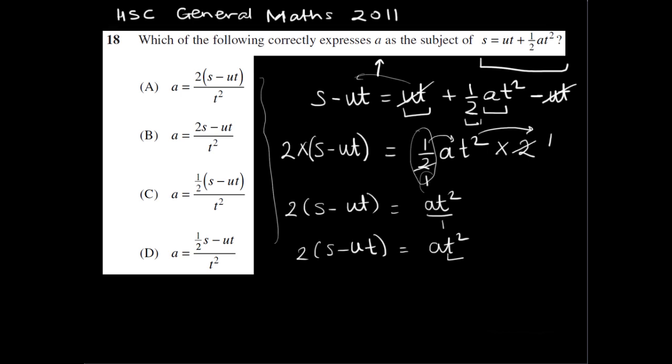Now we need to do something about this t squared. So to get rid of that t squared so that we have just the a, I'm going to divide by t squared so it cancels out. And again, what you do to the right-hand side, you must do to the left-hand side. So I'll divide the left-hand side by t squared.